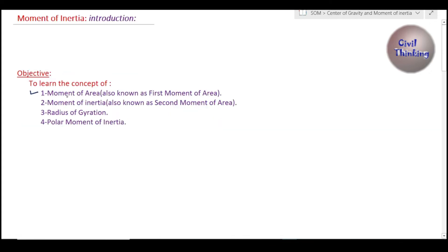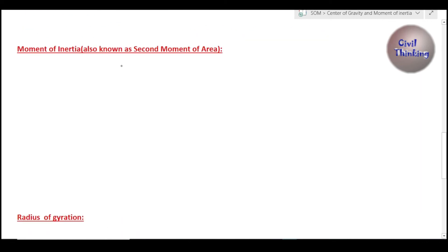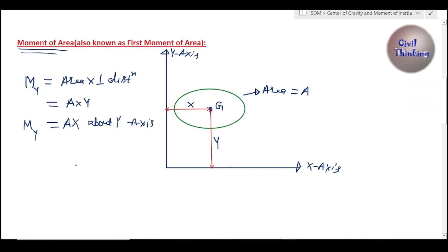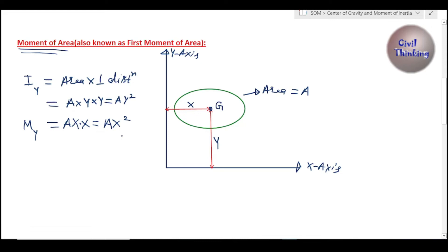Now let's talk about moment of inertia, which is also known as second moment of area. If we take the first moment about the x-axis, which is A times y-bar, and multiply it again by y-bar, we get A times y-bar squared. This is known as the second moment of area or moment of inertia. Similarly, multiplying the moment about the y-axis again by x-bar gives A times x-bar squared, which is the second moment of area about the y-axis.